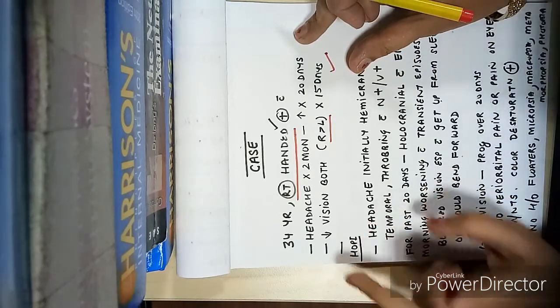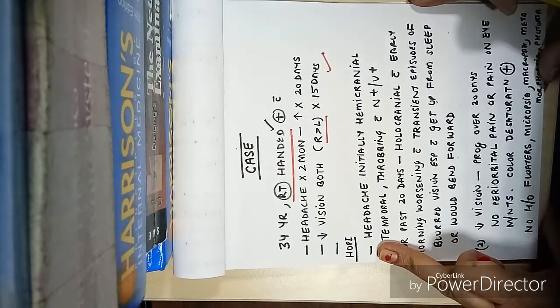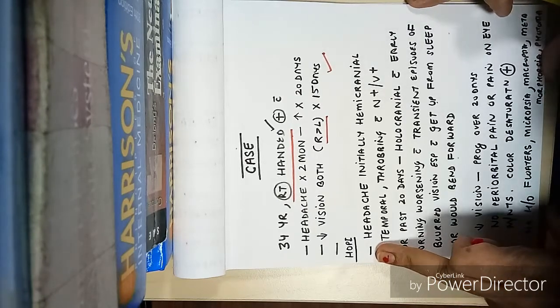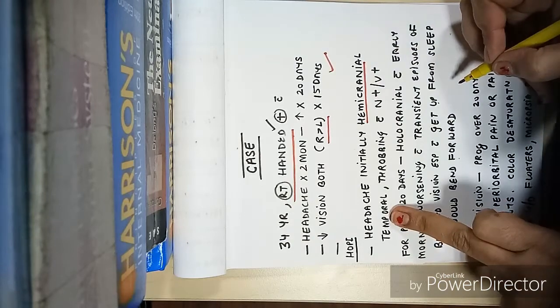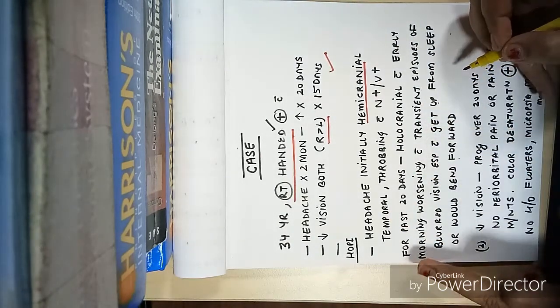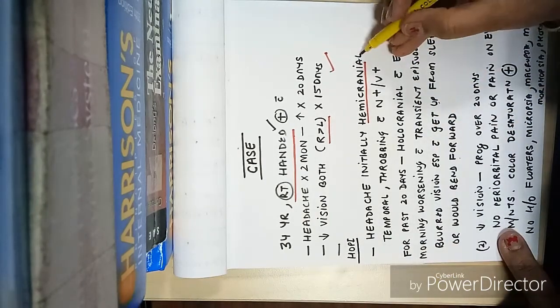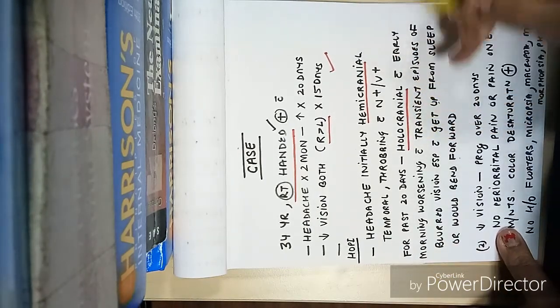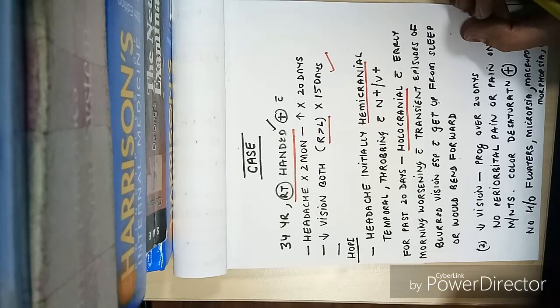In history of present illness, how will you take the history of headache? Headache in this patient was initially hemicranial, temporal, throbbing, associated with nausea and vomiting. But for the past 20 days the character had changed from hemicranial to holocranial.